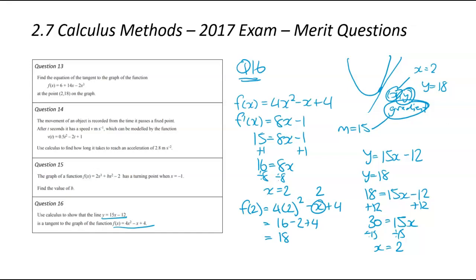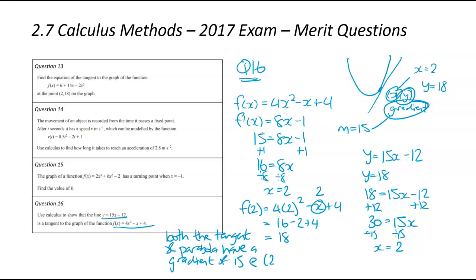So that means both the tangent and the parabola have a gradient of 15 at the point (2, 18). That wraps up our explanation.